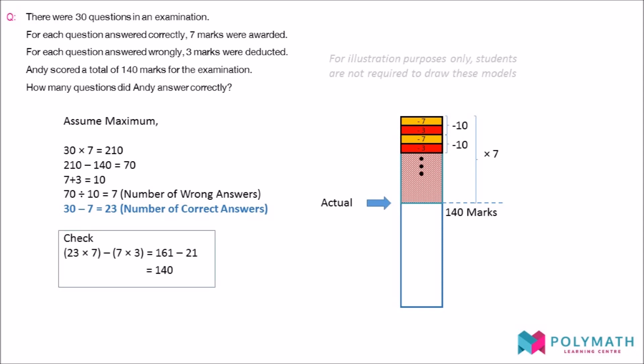We can always check our answer by multiplying the number of objects with their respective value and summing them together to check if it tallies with the total value given in the question. This takes you less than 10 seconds.